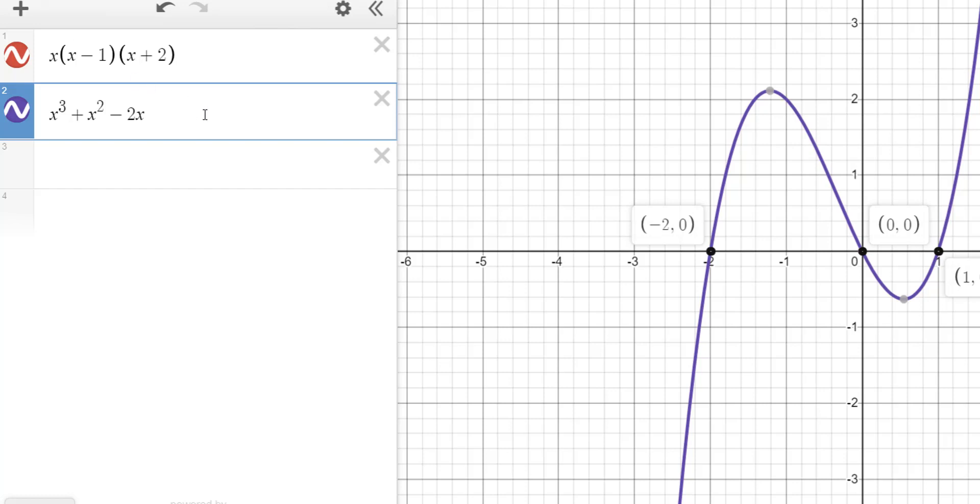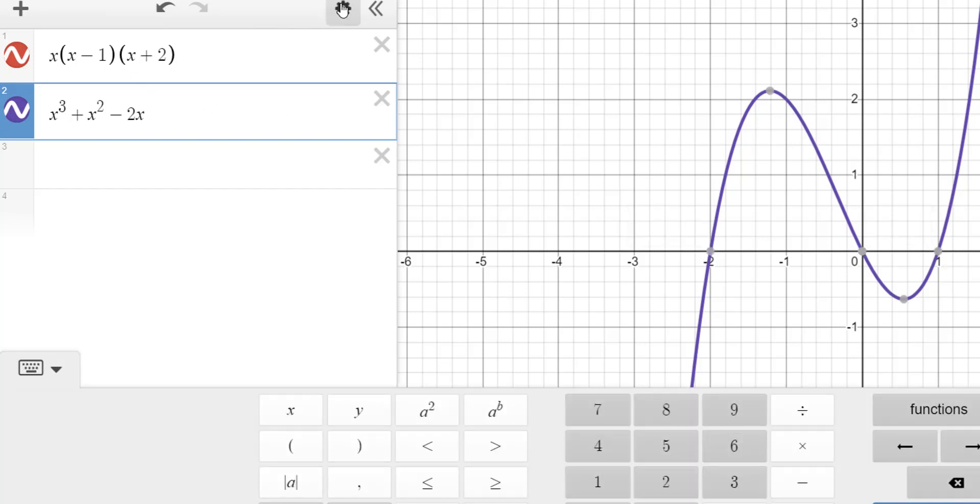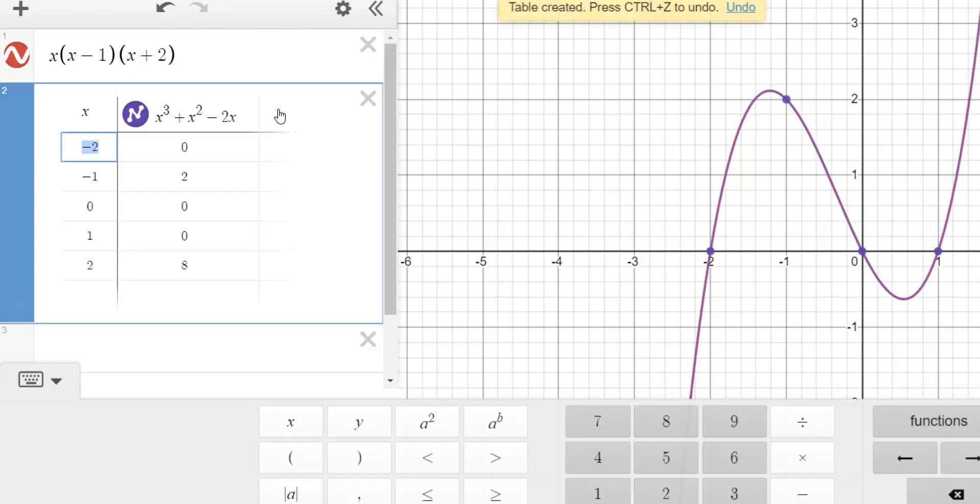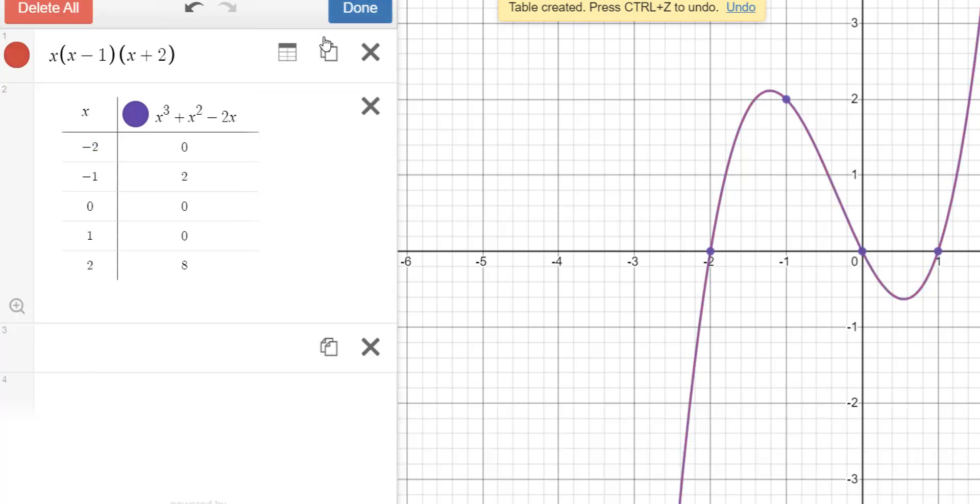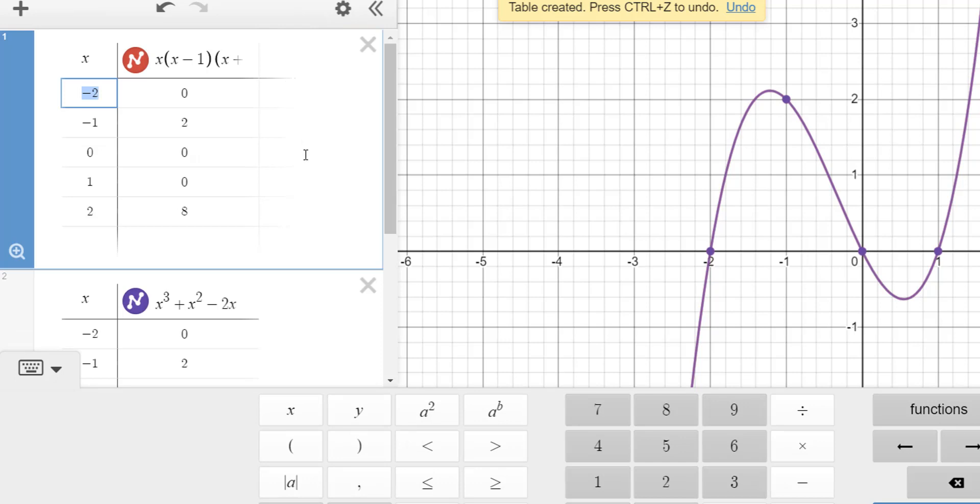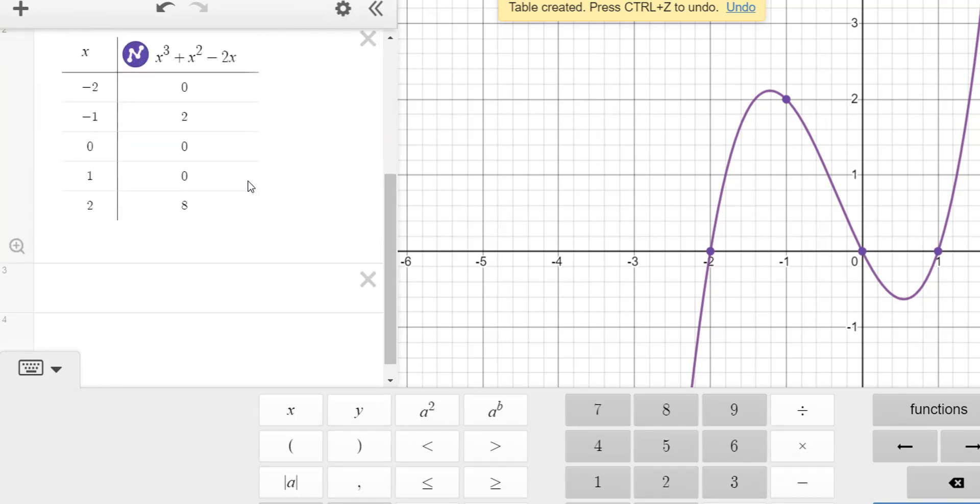So if I wanted to, here's another way you can check. If I wanted to change that to a table and take the first one, go up to the gear icon, change that to a table. If I look at the table, my table of values, they're identical for the same x values.